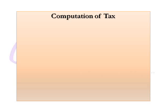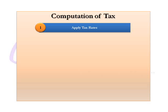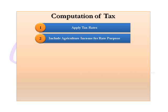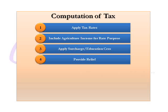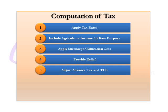Once taxable income is calculated, we need to calculate the tax on this income. First, we apply the applicable tax rates — there are different tax rates for different types of taxpayers. Although agricultural income is exempt, it needs to be added for rate purposes. After applying tax rates, we apply the applicable surcharge and education cess. The next step is to grant relief from tax — there are certain reliefs provided in income tax law to avoid undue hardship to the taxpayer. After this, we get the net tax payable by the taxpayer.